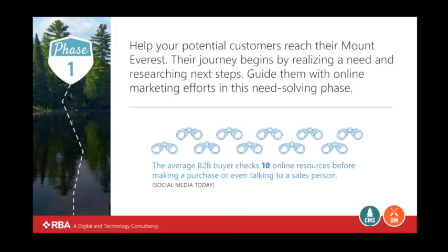They're going to be doing research. If anybody's ever bought anything online, you know that typically you don't just decide you have a need and go out and purchase it — you research it, you read about it, you look at reviews, you might check Amazon to see what the reviews are. We're in the process of buying a new washer and dryer for our house. I didn't just go out to the store and point. I started with: do I want a top load or a front load? Then I research what's the best option and what's the price point.